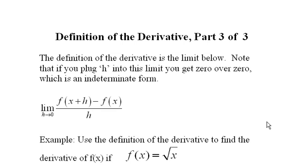The definition of the derivative, part 3. The definition of the derivative is the limit below: the limit as h heads to 0 of f of x plus h minus f of x over h. Again, if we plug 0 in for h we're going to get 0 over 0, an indeterminate form. We get this every time we take a derivative using the definition.